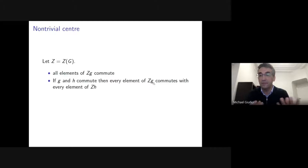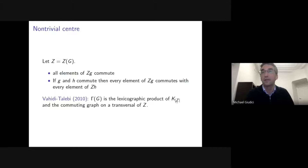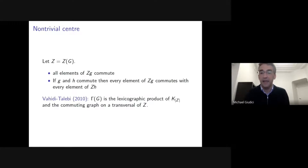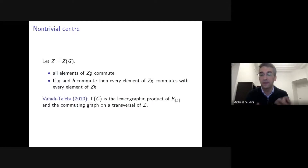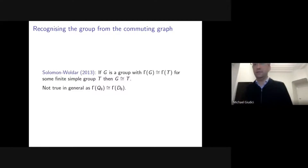An observation going back to Vahidi and Talebi in 2010 is that the commuting graph is always the lexicographic product of the complete graph on |Z| vertices with the commuting graph on a transversal of Z. So often when studying commuting graphs, we just take a transversal of the center and study the commuting graph of that transversal. If we understand the commuting graph on the transversal, we essentially understand the commuting graph of the whole group.